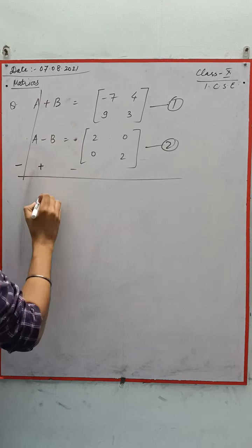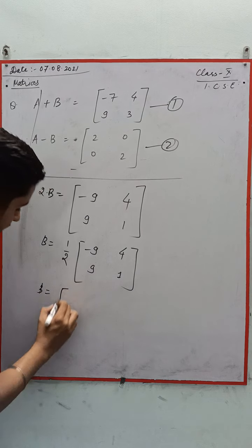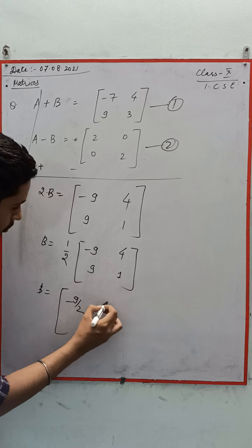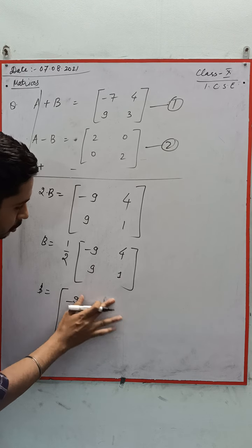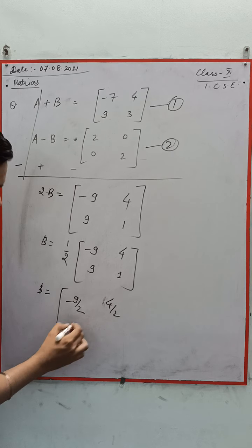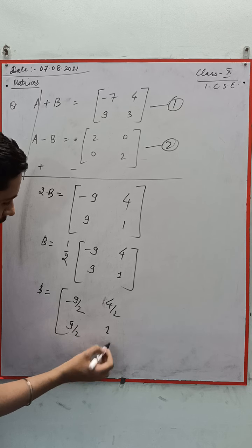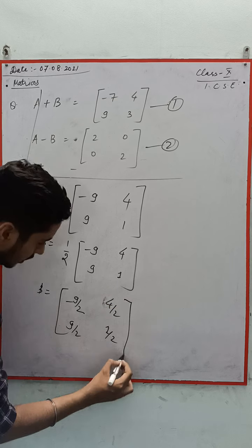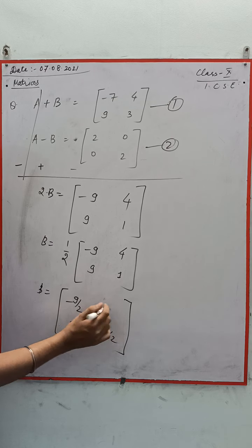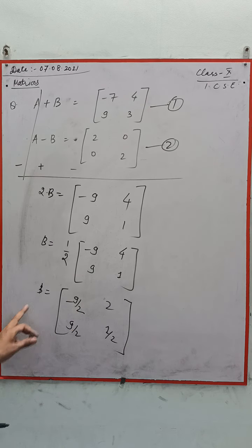So you got 2B. Now, this is 2 into B. So B will be equal to 1/2 times the matrix [-9, 4, 9, 1]. Take this half inside — it will be multiplied with all the elements. So it will be -9/2, 4/2 which gives 2, then 9/2 and 1/2. You can write 4/2 as 2. So this is your matrix B.